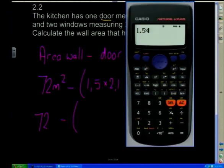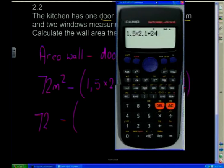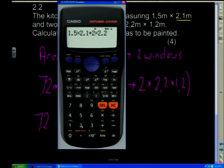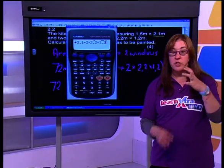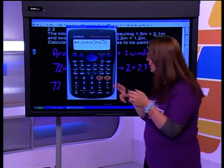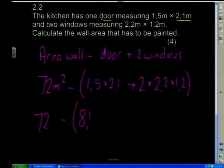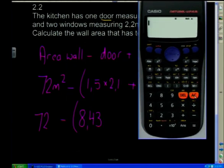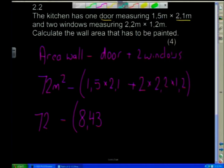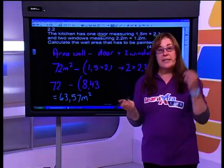So it was 1.5 times 2.1 plus 2 times 2.2 times 1.2. Please remember, if you are using a normal calculator you need to do this in stages and press equals between every calculation to follow the BODMAS rules. That answer is 8.43. So now we do 72 minus 8.43, and my answer for what needs to be painted is 63.57 meters squared. We've calculated the area of the wall that needs to be painted.